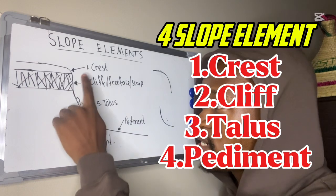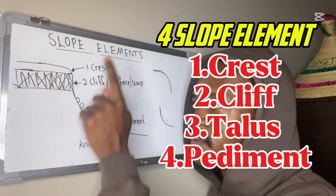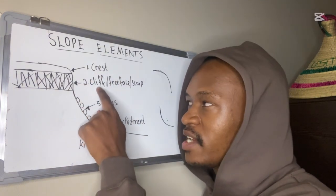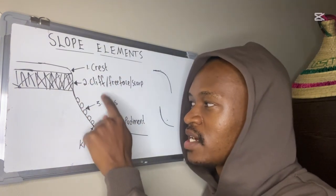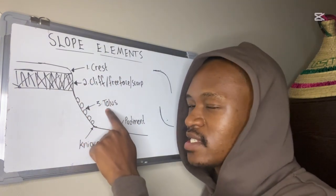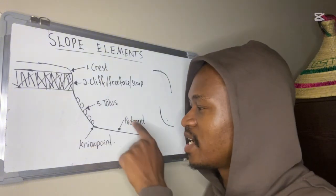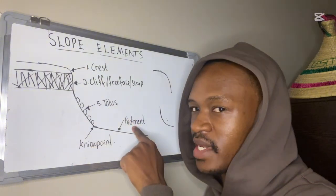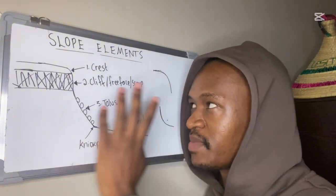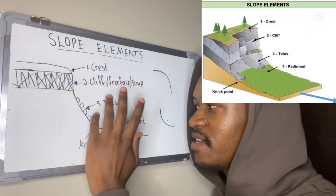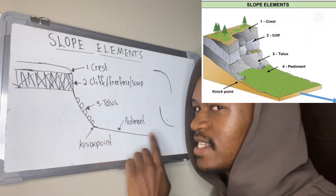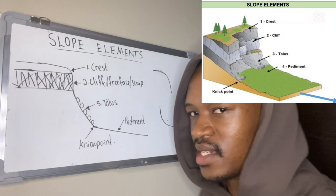Right at the top is the crest, followed by the cliff, the talus slope, and then lastly the pediment. So we have: crest, cliff, talus, pediment.